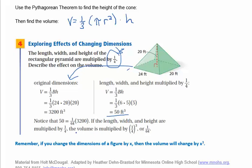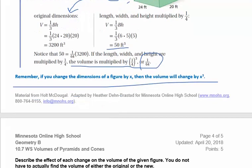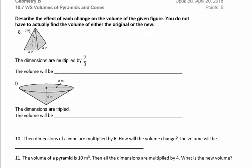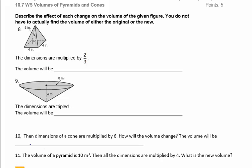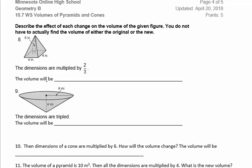You need to write a sentence saying something like 'the volume is multiplied by...' and state what it's been multiplied by. If you use the rule that changing dimensions by a factor of x changes the volume by x cubed, you don't actually have to find the volume for problems 8, 9, and 10. They give you what the dimensions are multiplied by, and you state how the volume will change.